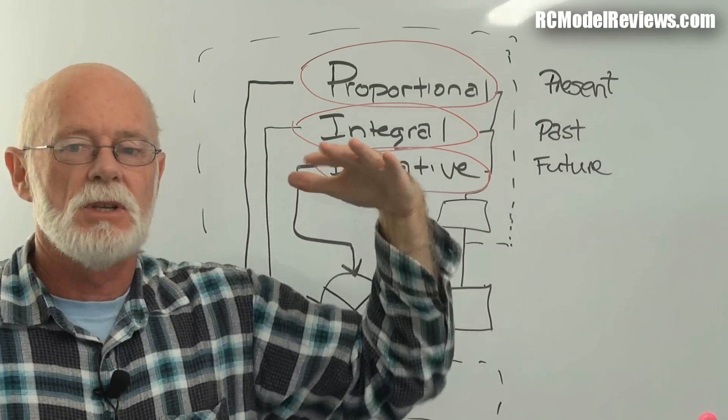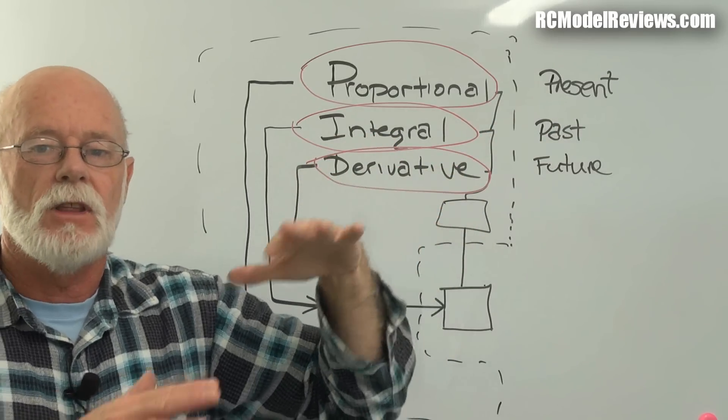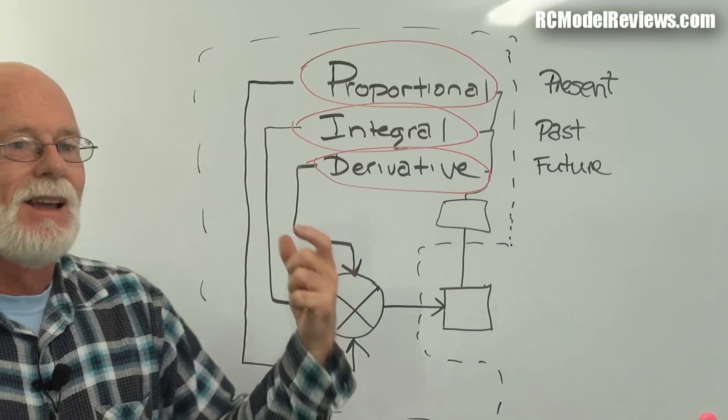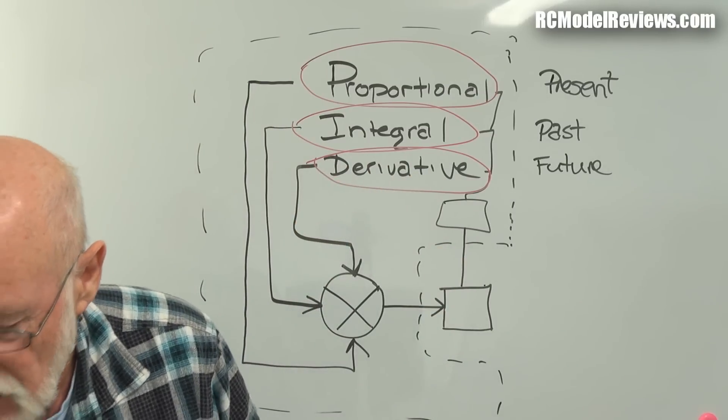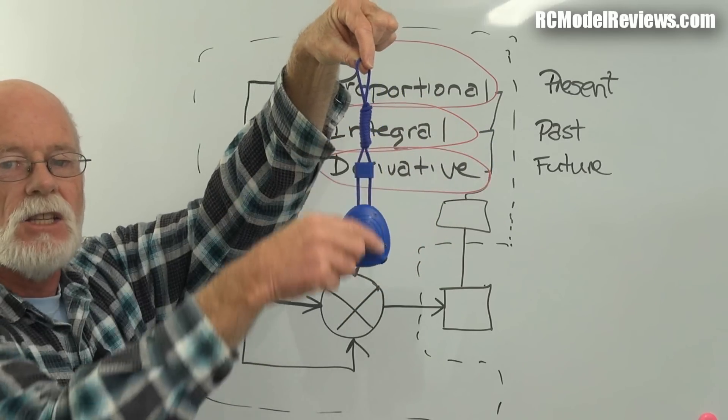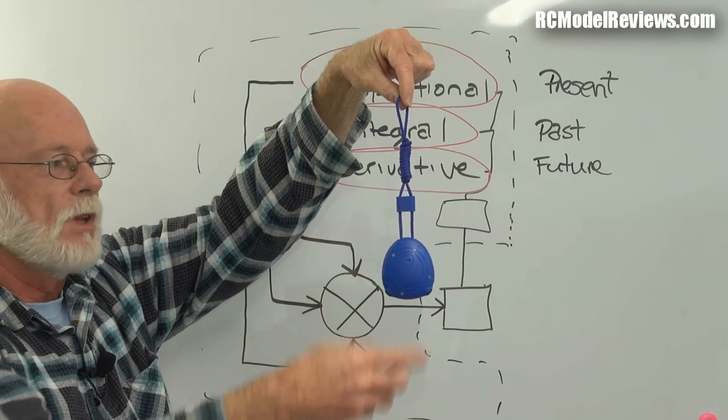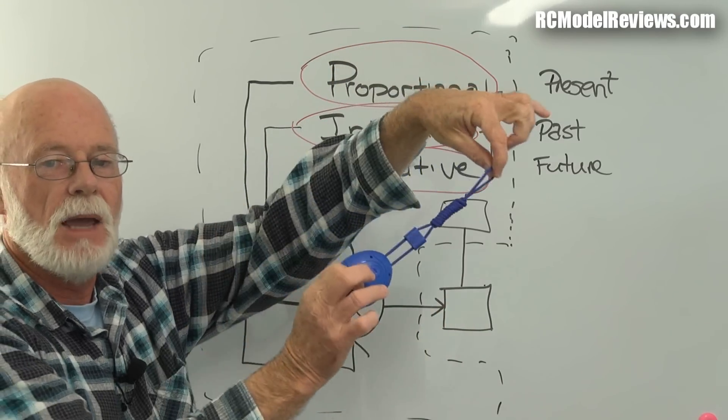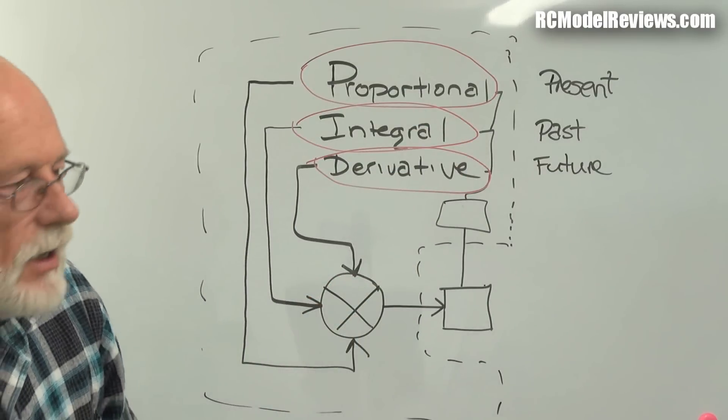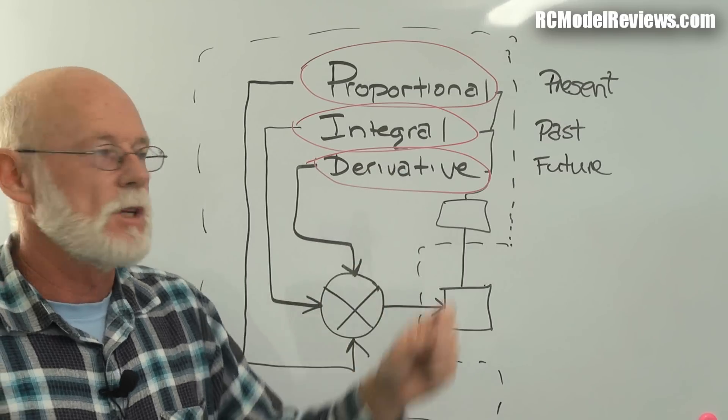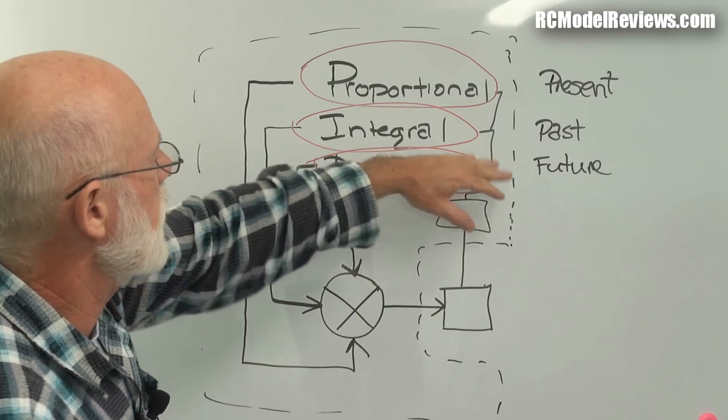So the present, proportional measures the present position of your quad, or the present error that needs to be corrected. It only works in the present. So that's the problem, because if you take instantaneous snapshots, and your pendulum goes from there to there, at that instant, which is the present of that time, it's fine. So it just turns off the corrective signal, and the inertia then takes your pendulum back past that point. So it doesn't take into account the past or the future. It's a very limited feedback mechanism, just using the proportional. That's why we have these other things.